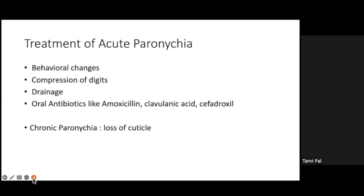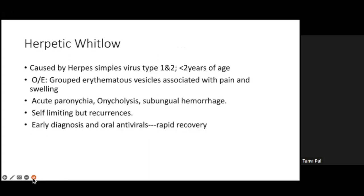Treatment for paronychia requires behavioral changes — stopping thumb sucking and nail biting. We need to compress the digits, perform incision and drainage, and prescribe oral antibiotics such as amoxicillin-clavulanate or cefadroxil. Chronic paronychia is very rarely seen in children and is due to loss of cuticle, which can lead to inflammation.